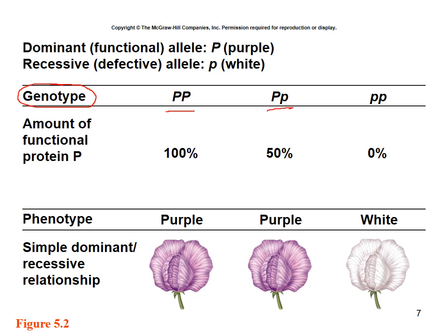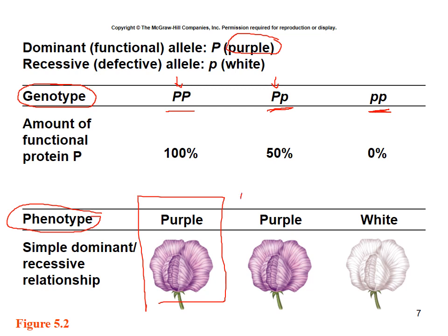What Mendel told us is that as long as you have one copy of the dominant trait, you will automatically show the purple phenotype. And indeed, if you're homozygous dominant the flower is purple, and if you're heterozygous — because you have at least one dominant trait — the flower is purple as well. You will only see a variation if you inherit the homozygous recessive, therefore allowing the flower to be white.